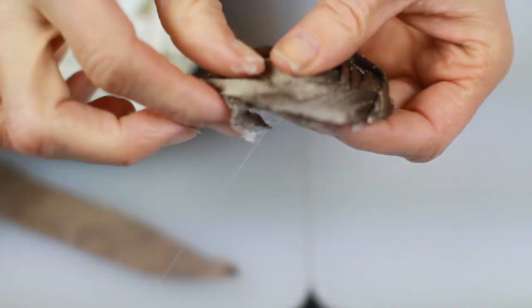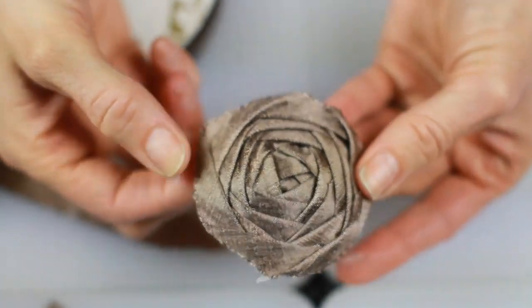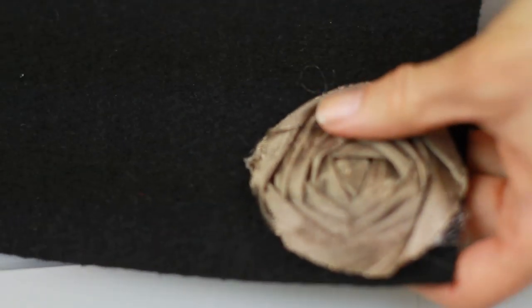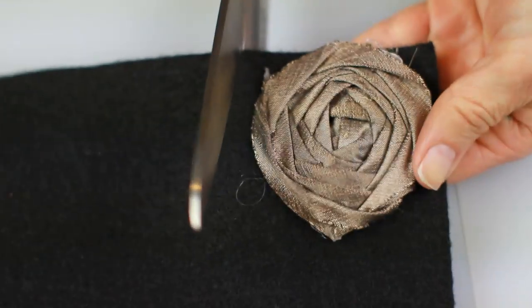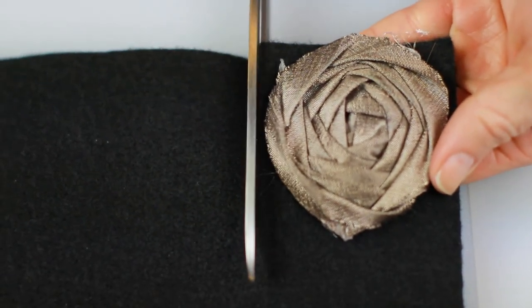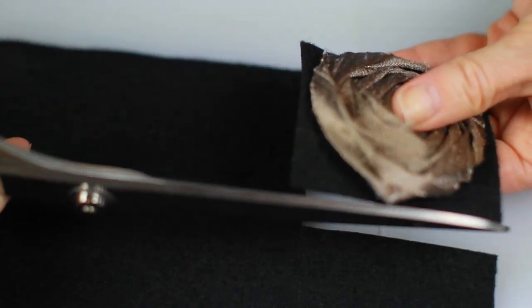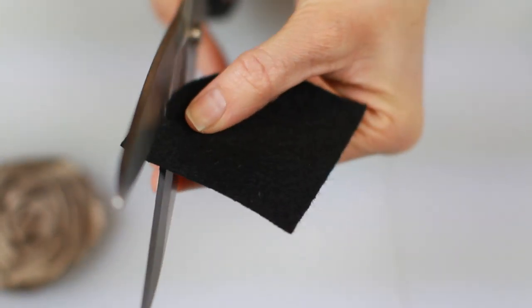Now, we're going to finish it off by putting some felt on the back. So I just line it up with my felt and cut a square around it and then I kind of use that to gauge the size. Cut it into a circle. If you need to trim a little more off, totally fine.